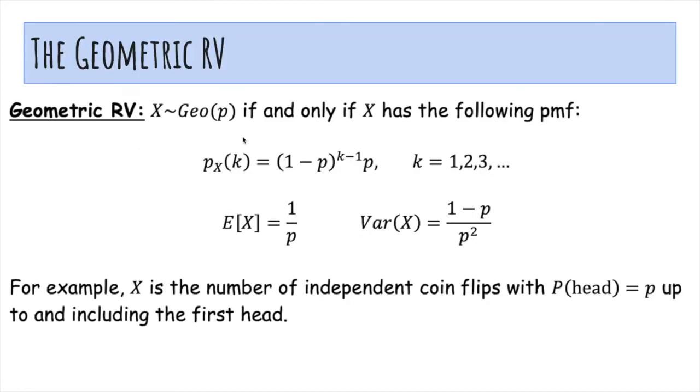So we'll say X is geometric p if and only if it has the probability mass function like this. And here are the main invariants, which we'll show later. X is the number of independent coin flips with probability heads p up to and including the first head.